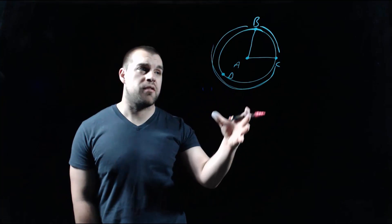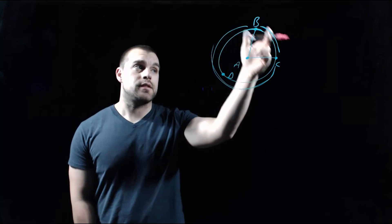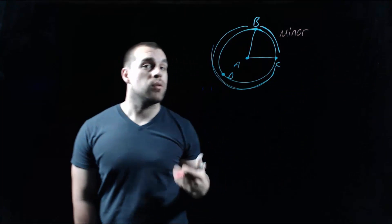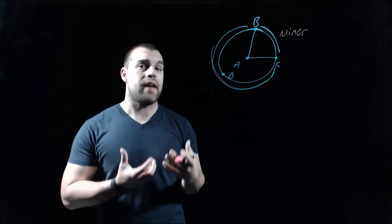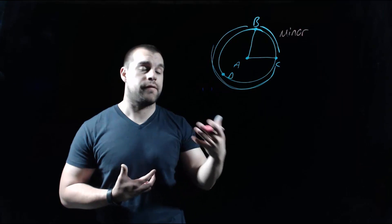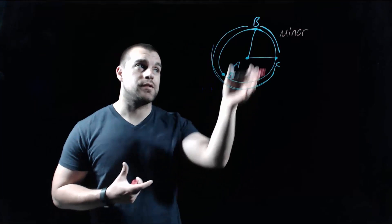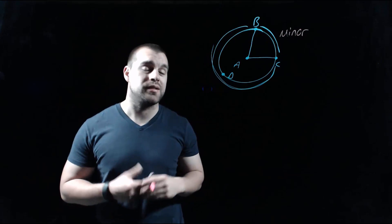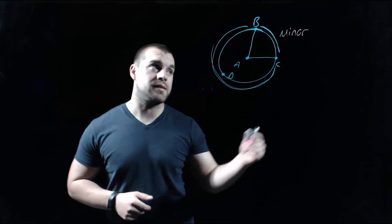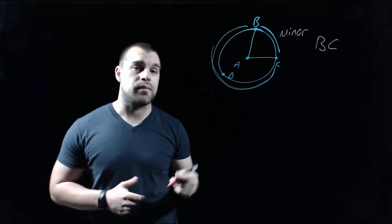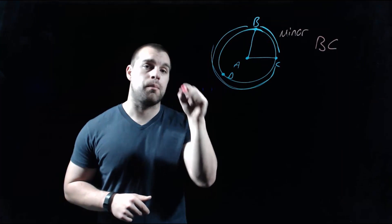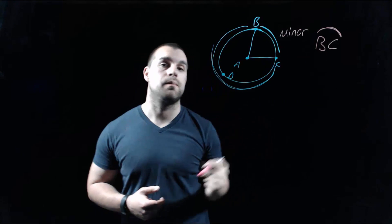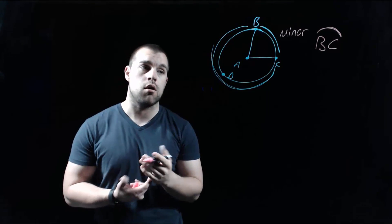Going back to our picture, the arc that goes from B to C is going to be a minor arc, because it's less than half the circle. Half of a circle is 180 degrees, since a full circle is 360. When naming minor arcs, we use the two endpoints — so we would call this arc BC. We show that something is an arc by putting a little arc symbol over the top of it, just like with lines we put a line over the top.